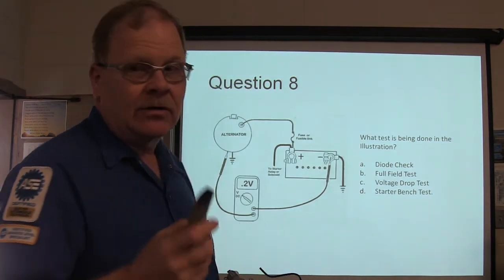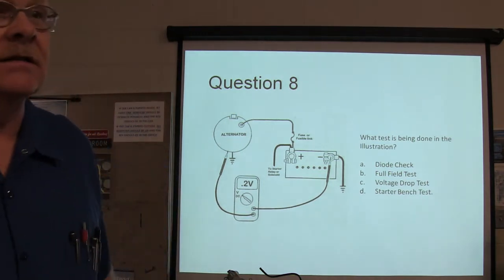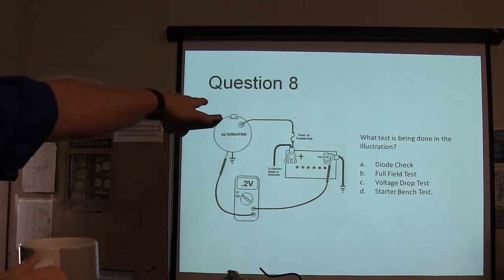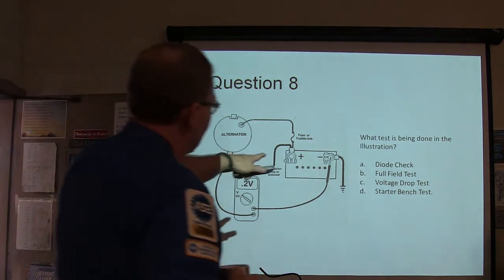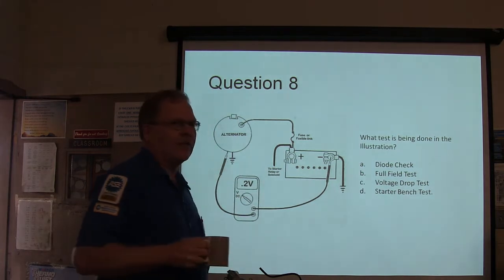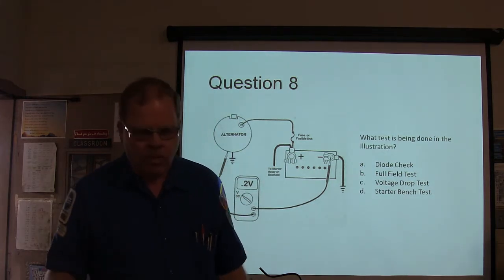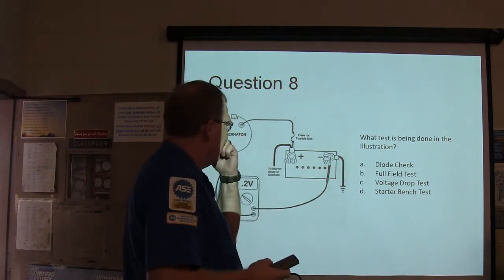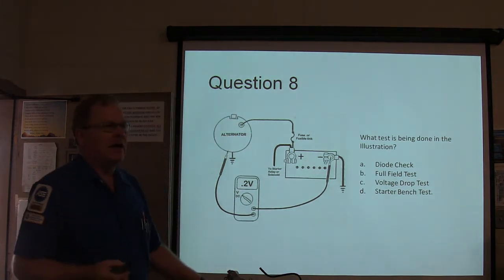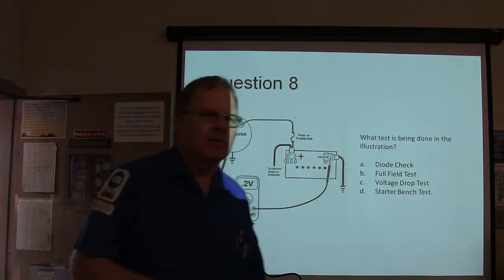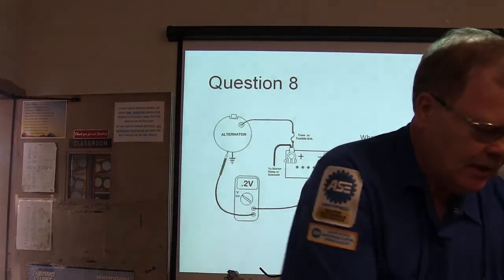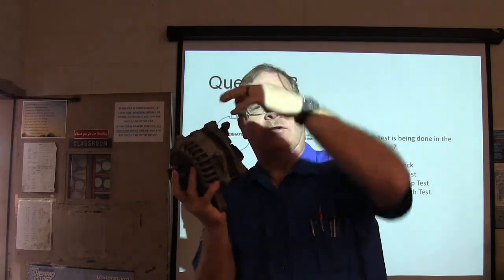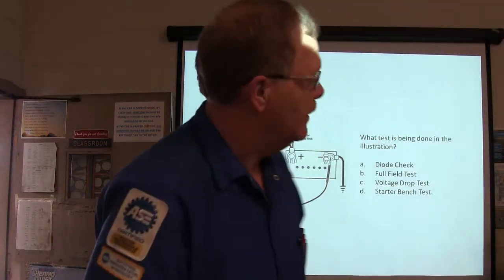That's a full field test. That's B. All right. What test is being done in this illustration? You better know the answer in this one. Because this is not a hard question. You notice I've got my meter connected from this negative battery terminal right to the post and I'm going to the negative part of the alternator. Now, what is that? Give that man a cigar. Voltage drop.